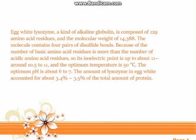Egg white lysozyme, a kind of alkaline globulin, is composed of 129 amino acid residues with a molecular weight of 14,388. The molecule contains four pairs of disulfide bonds. Because the number of basic amino acid residues exceeds the number of acidic amino acid residues, its isoelectric point is around 10.5 to 11. The optimum temperature is 50°C, the optimum pH is about 6 to 7, and lysozyme accounts for about 3.4% to 3.5% of the total protein in egg white.